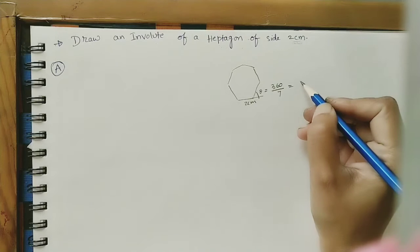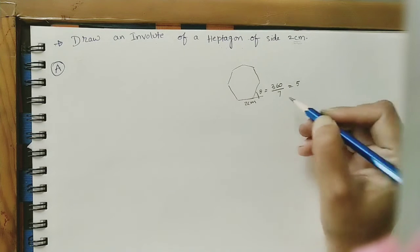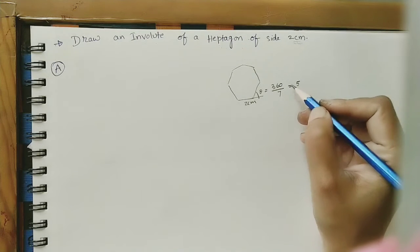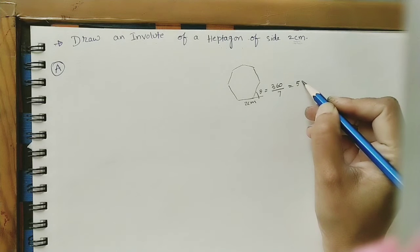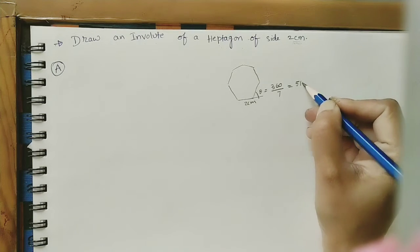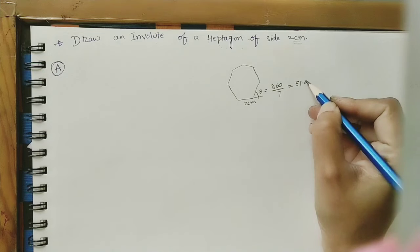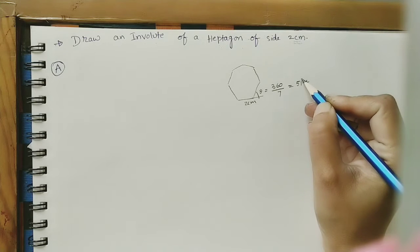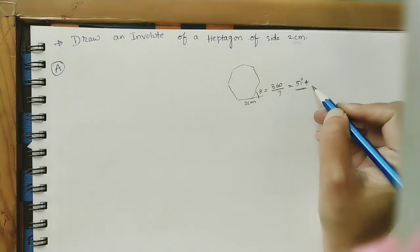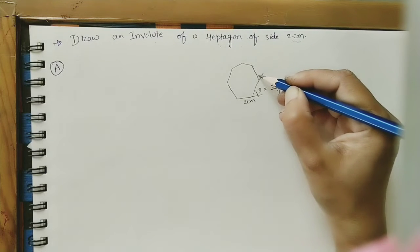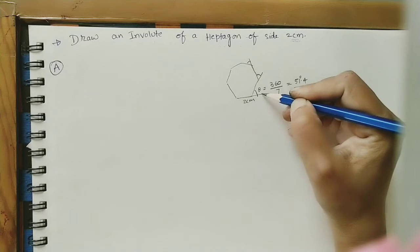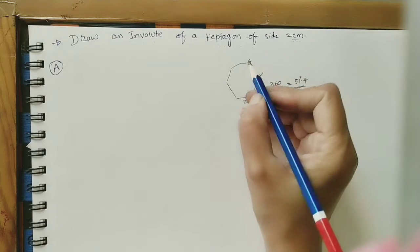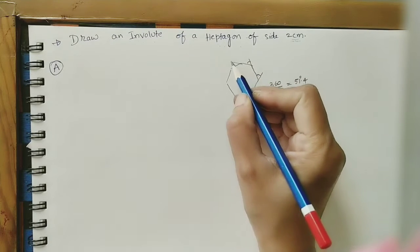360 divided by 7 gives approximately 51.4 degrees. So all outer angles of the heptagon have the same value of approximately 51.4 degrees.